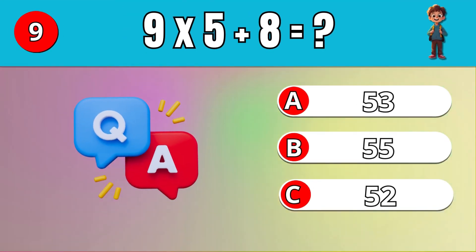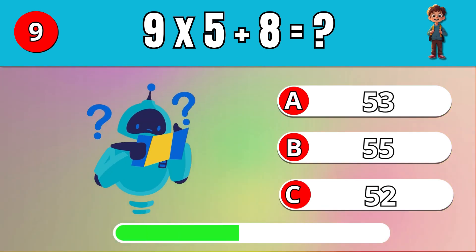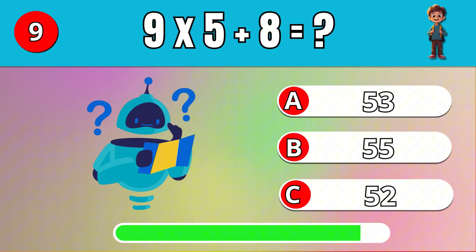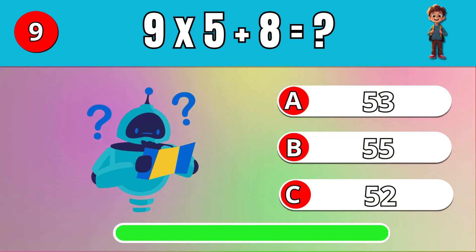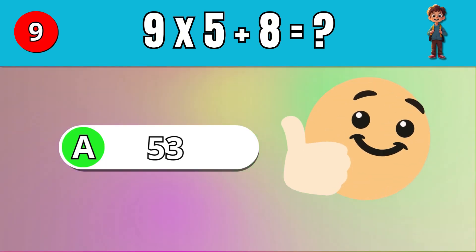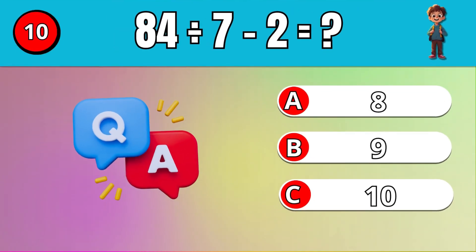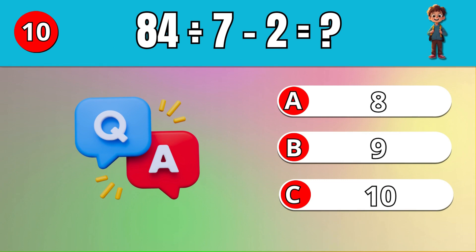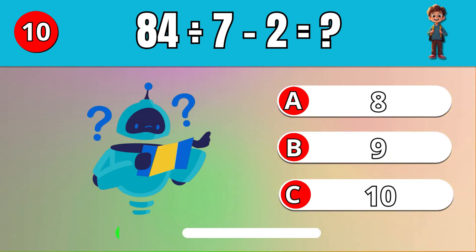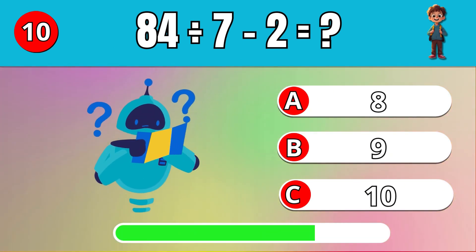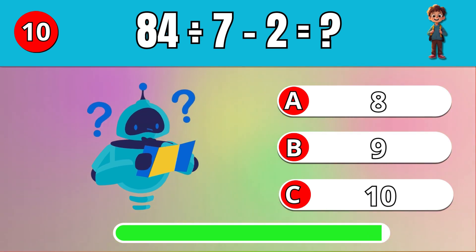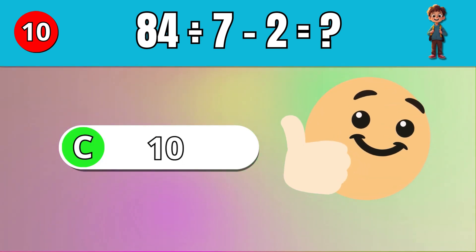What is 9 times 5 plus 8? A, 53. What is 84 divided by 7 minus 2? C, 10.